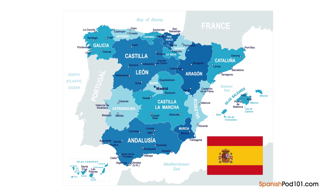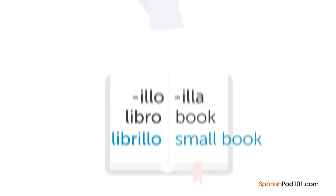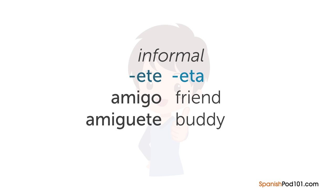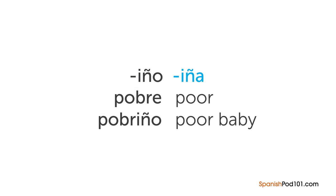Another common suffix, particularly in Andalucía in southern Spain, is -illo or -illa. From 'libro' meaning book, we get 'librillo' meaning small book. We also have the suffix -ete or -eta, used more informally — from 'amigo' meaning friend, we get 'amiguete' to express tenderness. And with more local use in Galicia in northern Spain, the suffix -iño or -iña: from 'pobre' meaning poor, we can say 'pobriño,' also adding tenderness.